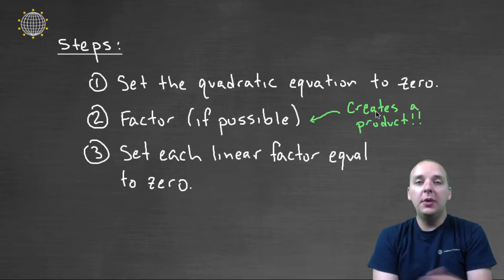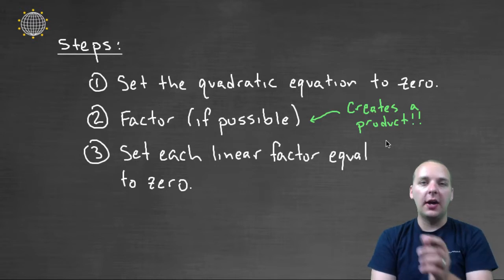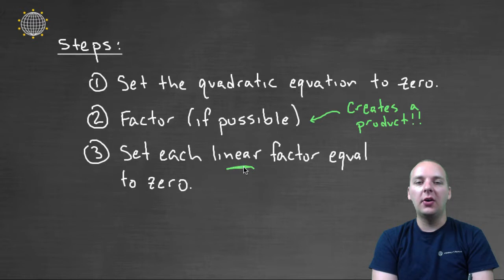And what does it mean when you factor something? Well you're going to create a product. And so if you have a product equal to zero, either the first factor equals zero or the second factor equals zero.